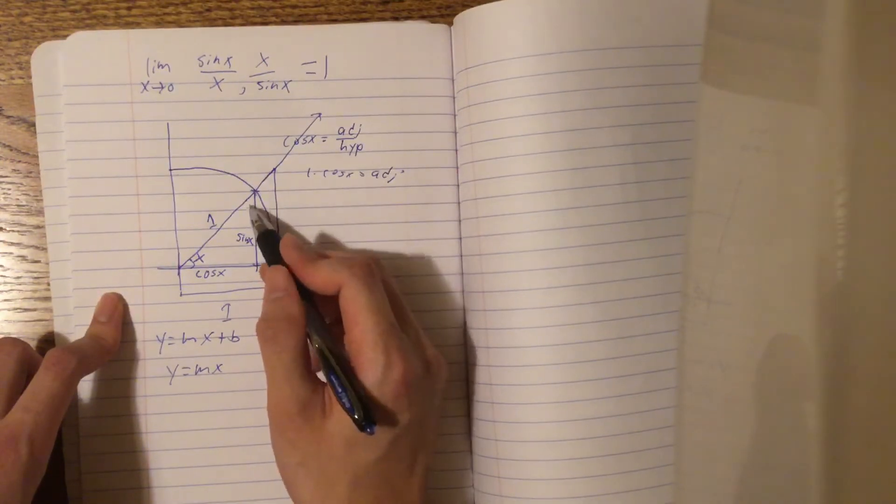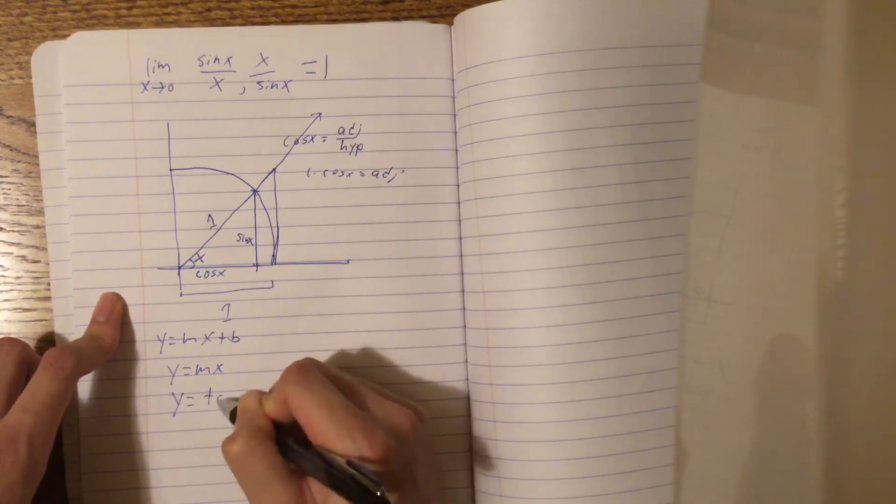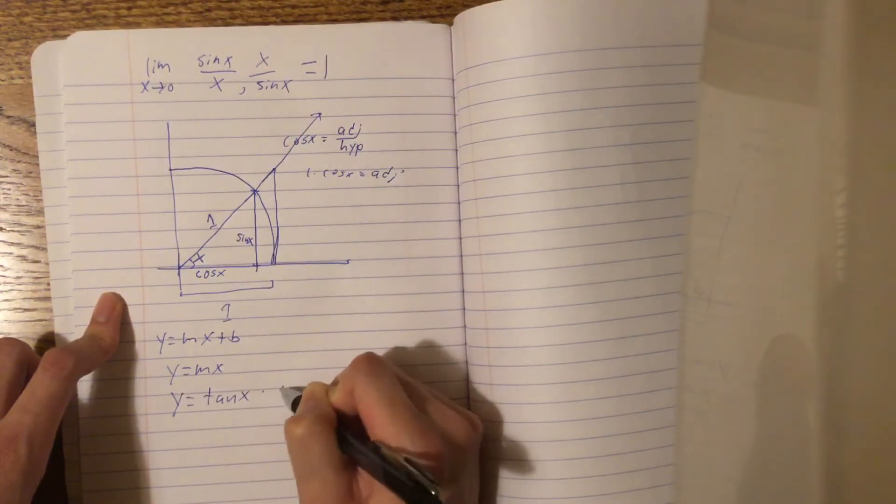Sine x, its slope would be sine x over cos x, or its rise over run would be tan x. So, the slope is tan x times x.